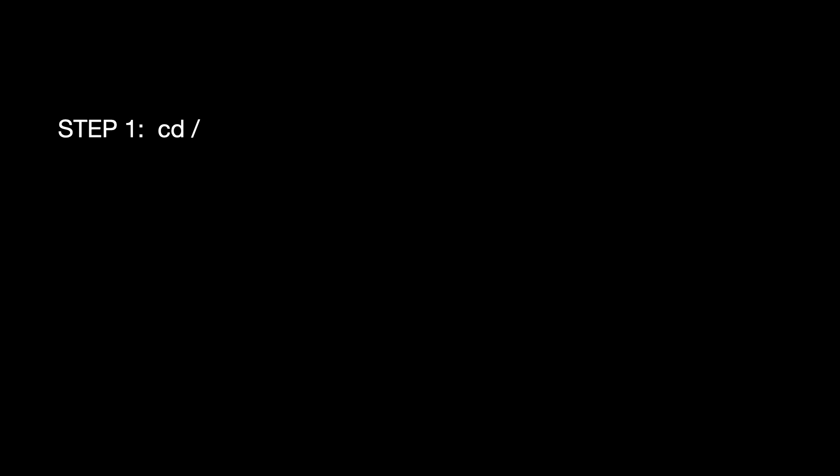The first thing you need to do is open up your terminal, and then at your terminal you want to type in this quick little string: cd space forward slash. What we're going to do is just get ourselves back to the root directory so we can have a good place to start. Our next step, we are going to make a directory called ramdisk in a temp file, and that's what this string does. You have to be a super user to do that, so that's what sudo does for you. You'll enter in that string, hit enter, and if you haven't done this before it'll ask you for your password, and then it'll go ahead and execute the command.